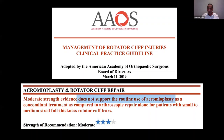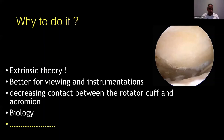Why do people still do acromioplasty? Because there is still belief in the extrinsic theory, or at least a mixture of intrinsic and extrinsic factors that you cannot exclude. It also provides better visualization, especially in a tight shoulder, and decreases contact between the rotator cuff and acromion after repair, protecting it. We also cannot ignore the biology — stem cells from the acromioplasty site help with rotator cuff healing.